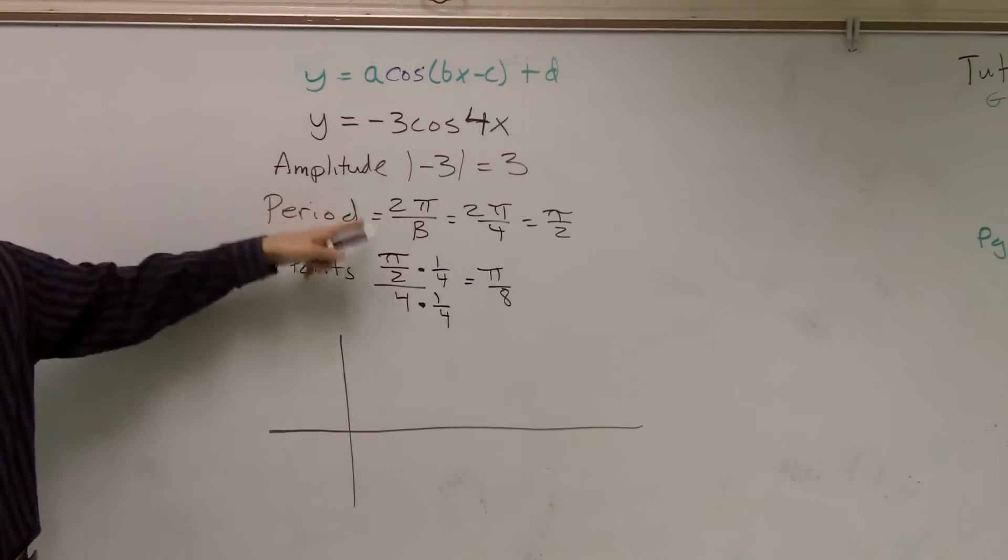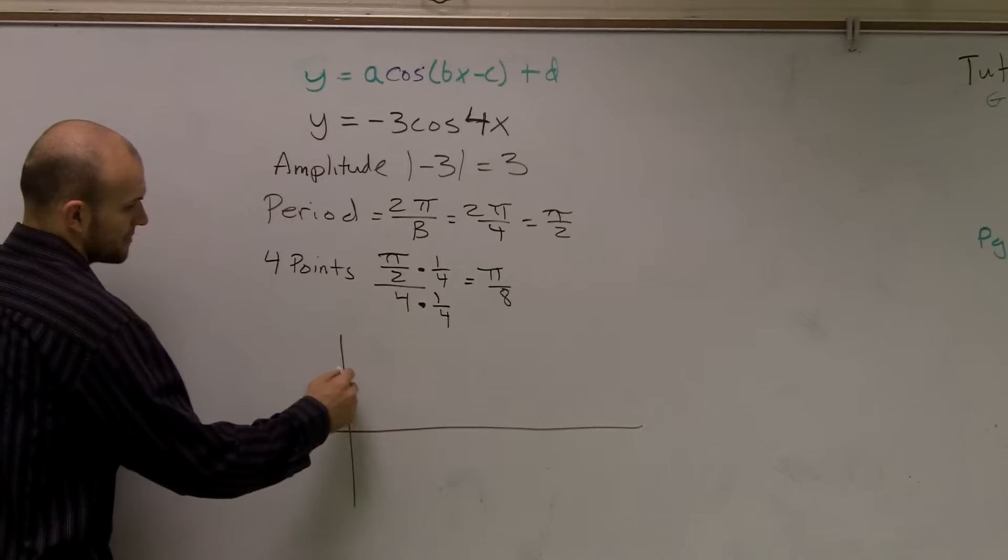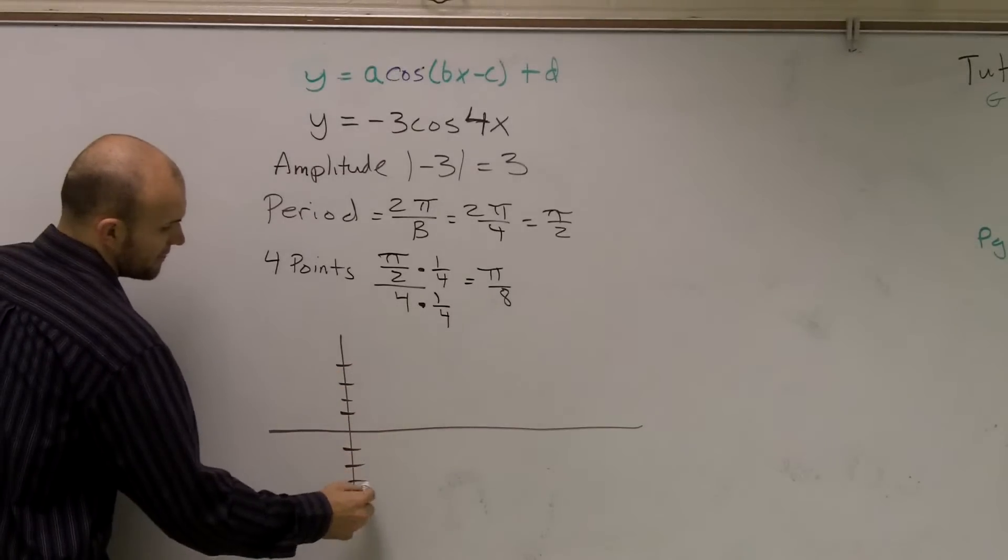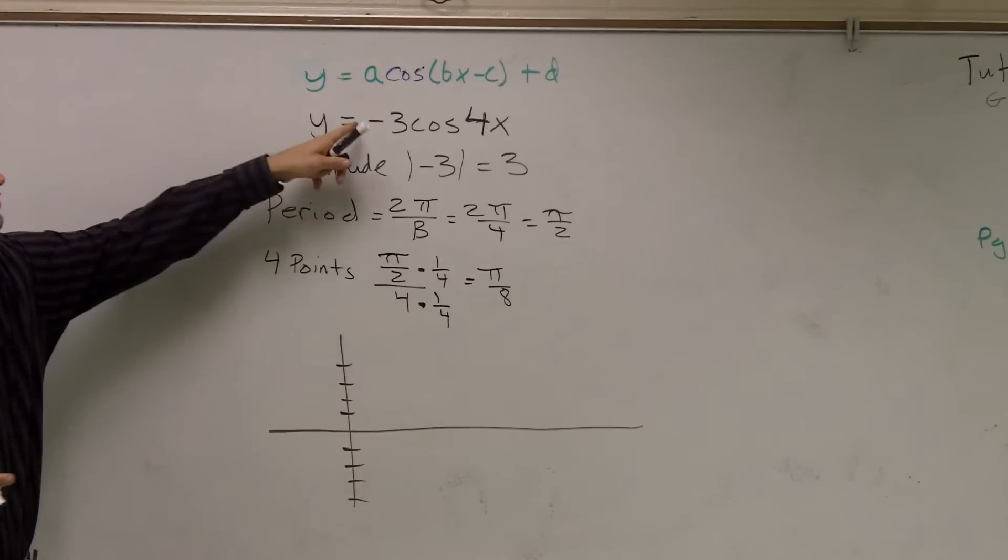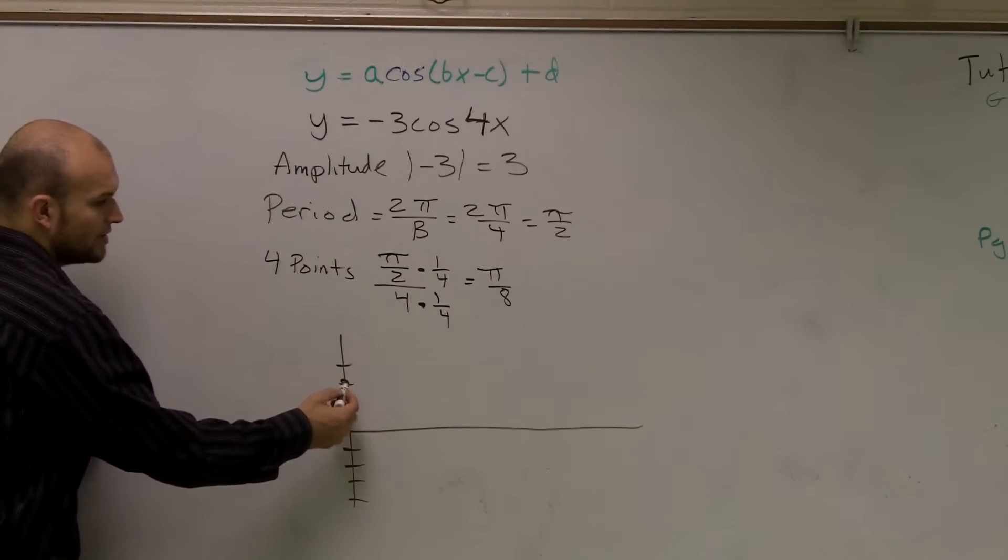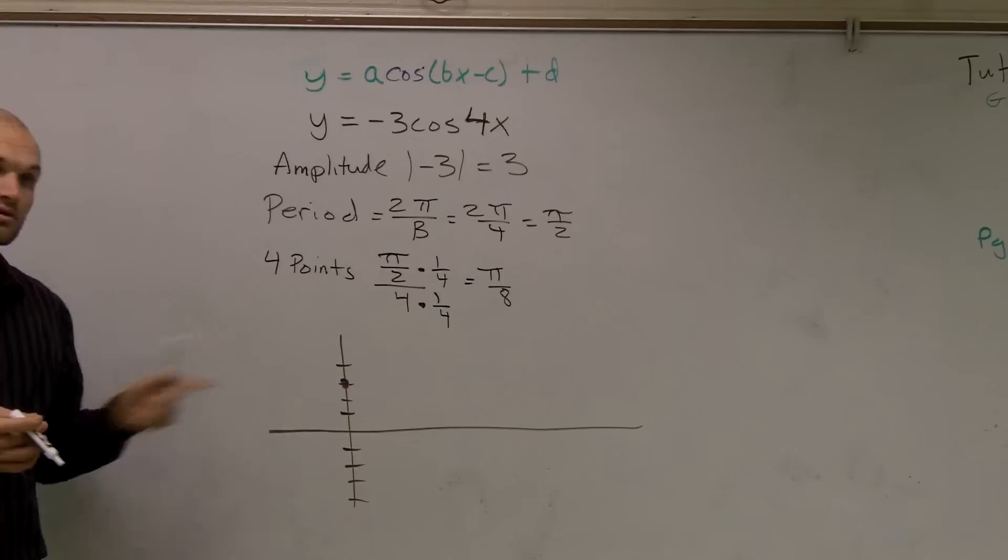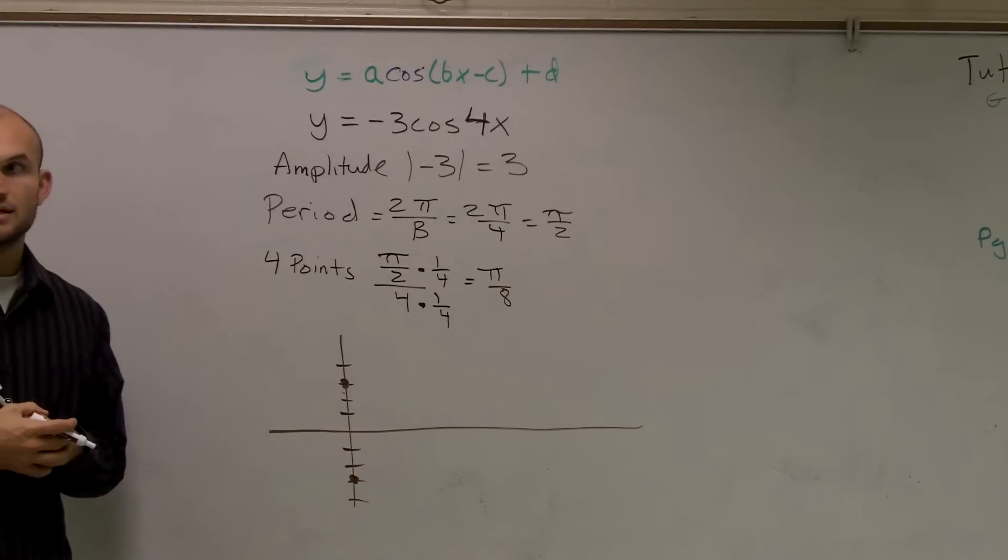Now, I know my graph is going to go up 3 and down 3, so I'm going to at least go up that high and that far down. I do know that it's a reflection. Usually a cosine graph crosses the y-axis here. Well, since it's a reflection, I'm now going to cross it at negative 3. Make sense?